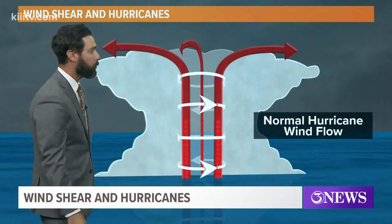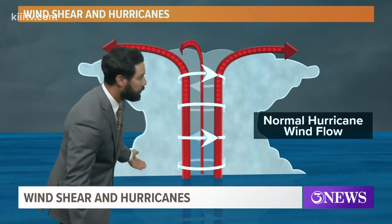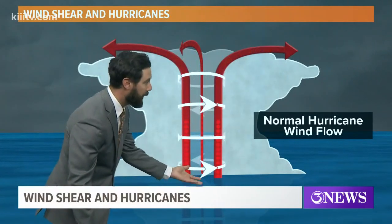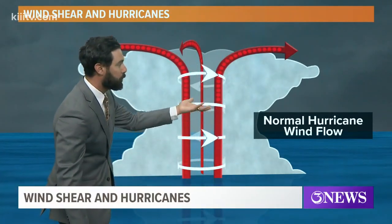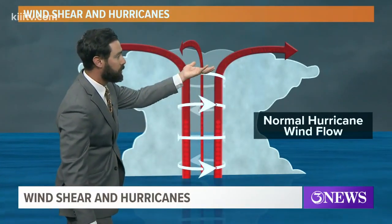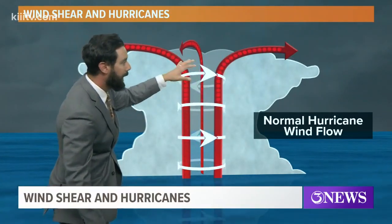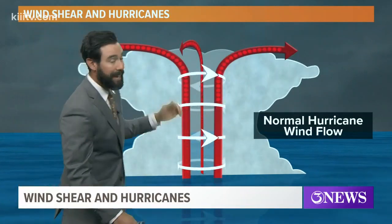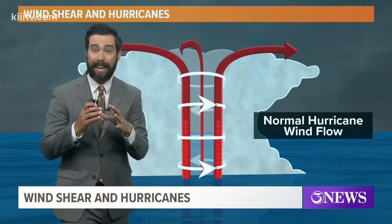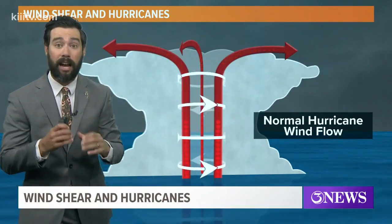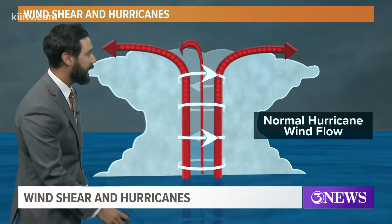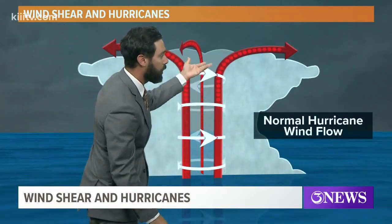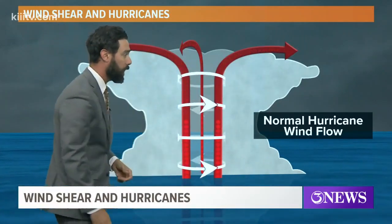Normal hurricane wind flow tracks into the eye — the center of the storm — and then rises through the center before exiting out the top. That's what gives hurricanes their classic cyclonic look on satellite imagery. This is under normal hurricane wind flow.